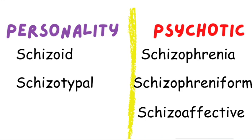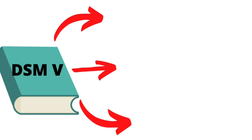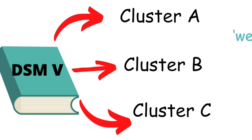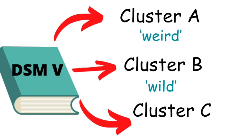There are 10 personality disorders described in the DSM-5. These disorders are further divided into three clusters: Cluster A, Cluster B, and Cluster C. We can remember them with the three W's — Weird, Wild, and Worried. But for this video, we will be focusing on Cluster A.